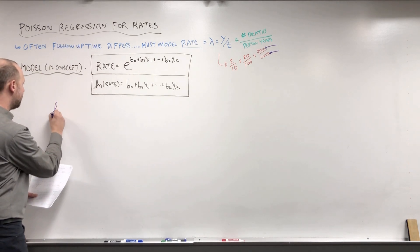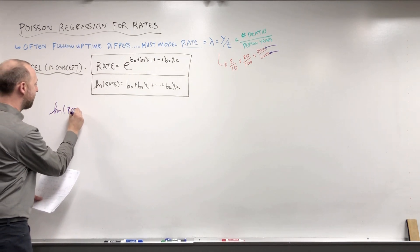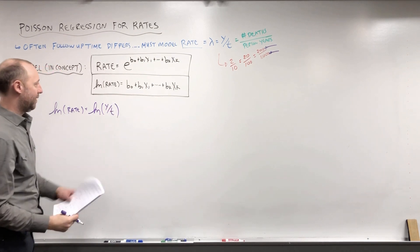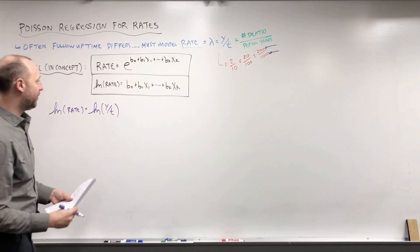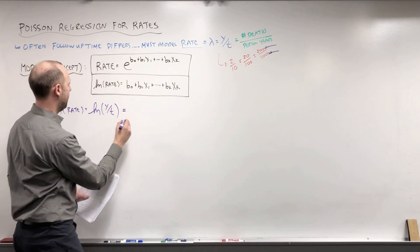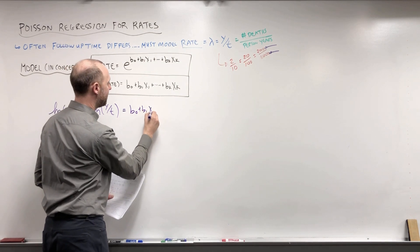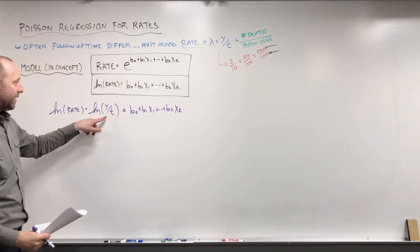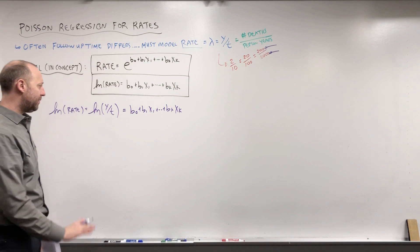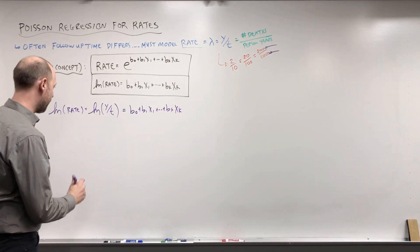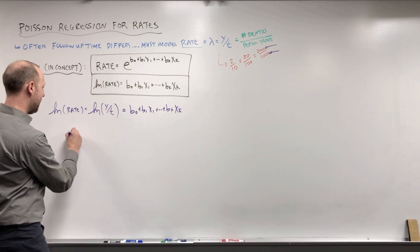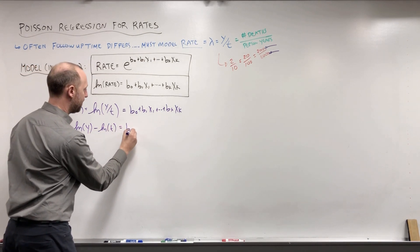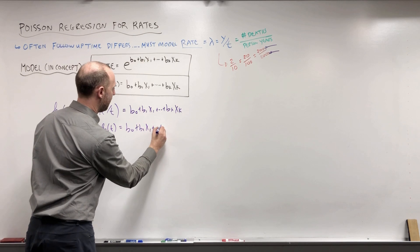What I'm going to write here is: the log rate can be written as the log of y over t — y over t being the rate, the number of occurrences per unit time — and that equals b-naught plus b1*x1 all the way up to bk*xk. Now, using the properties of logs, the log of y over t can be written as log(y) minus log(t), which equals b-naught plus b1*x1 all the way up to bk*xk.